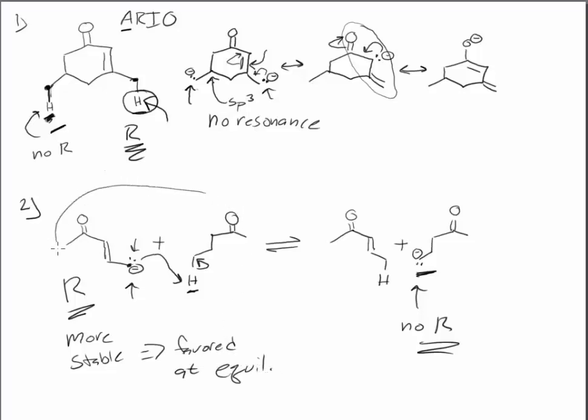And this will be favored at equilibrium. And so we would, if we're asked to circle or just indicate which side is favored at equilibrium, we could circle that side. So basically what we're saying is if we mix this anion with this ketone here, we're going to get no reaction or very little reaction. Most of the molecules will remain as the starting material.